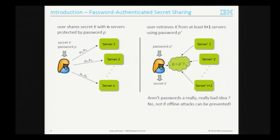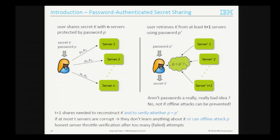We are already in a multi-server setting with secret sharing. Password authenticated secret sharing also adopts secret sharing for passwords: you need T+1 shares both to reconstruct K and to verify whether P prime equals P. If at most T servers are corrupt, they learn nothing about K and cannot offline-attack P. With at most T corrupt servers, there is always at least one honest server in the verification, which will block the account after too many failed login attempts — mimicking the behavior of bank cards that block after three wrong PIN entries.